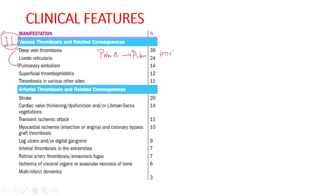Thrombosis in the inferior vena cava can lead to Budd-Chiari syndrome. There can also be cerebral venous thrombosis, which mainly presents as intracranial hypertension, or retinal vein thrombosis. Livedo reticularis consists of a mottled reticular vascular pattern and purplish discoloration of the skin, mainly of the lower limb, caused by swelling of venules due to capillary obstruction by thrombus. The most common manifestation in venous thrombosis is deep venous thrombosis, followed by livedo reticularis.